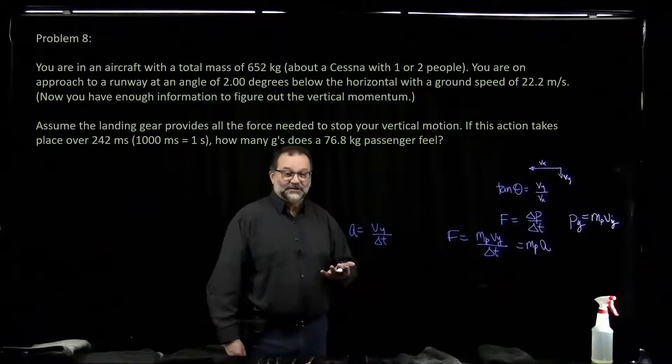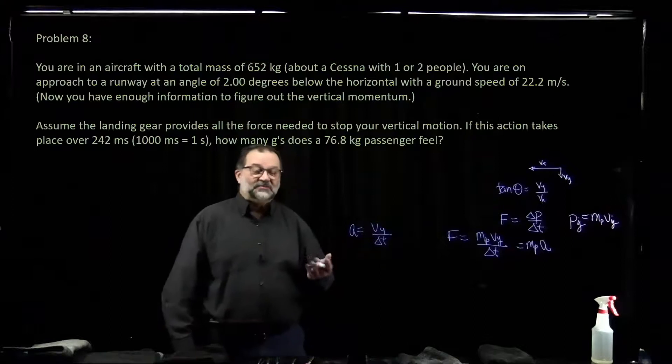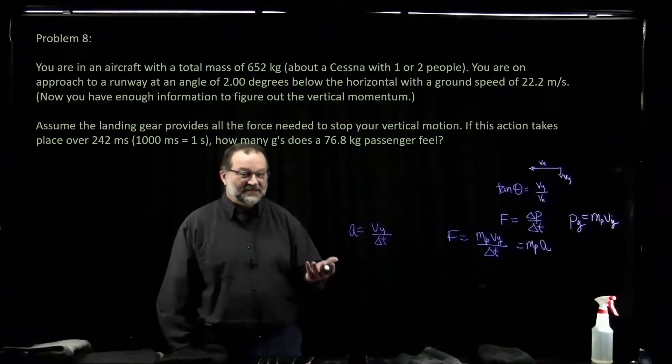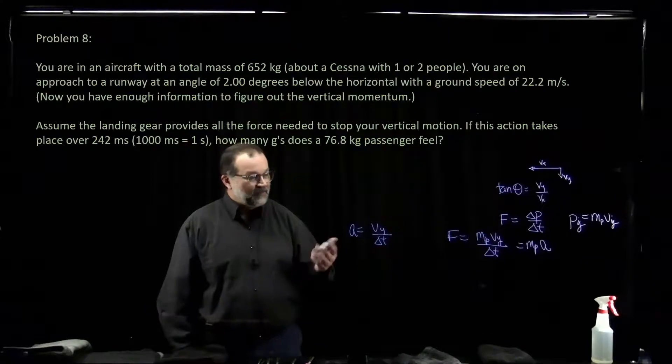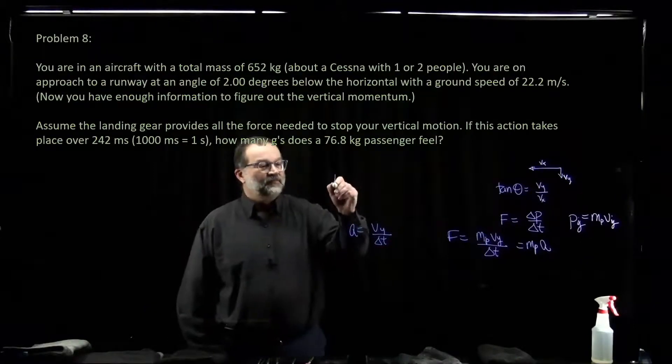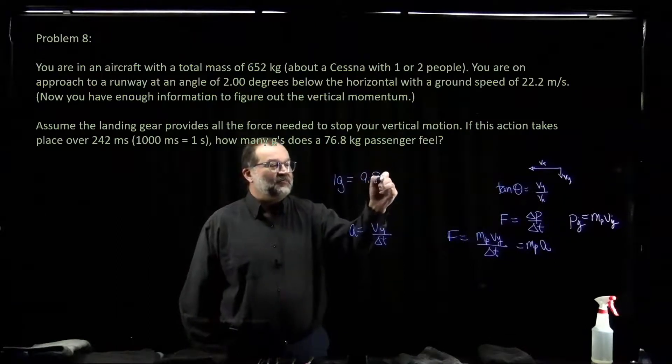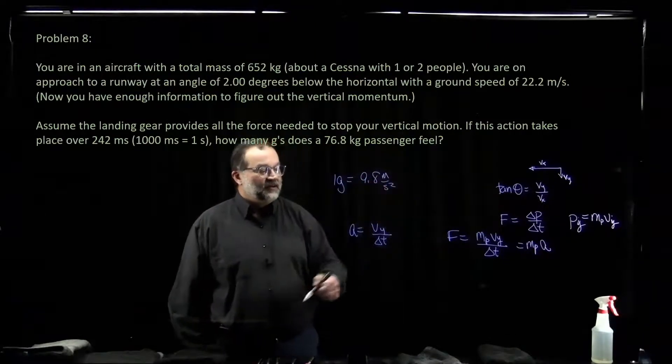So we know the acceleration. Now, I want you to express this in g's. So how do you express it in g's? Well, 1g, if you think of it as a conversion, 1g is 9.8 meters per second squared.